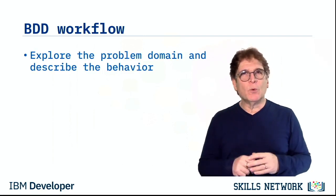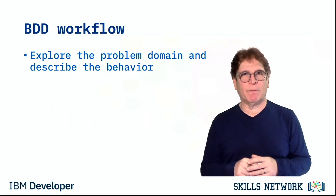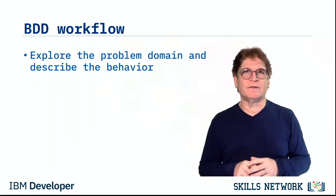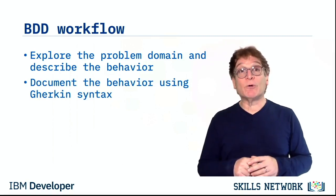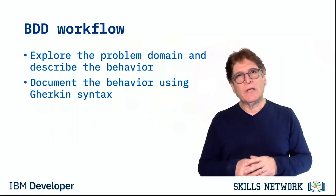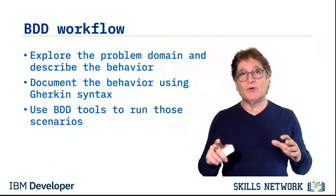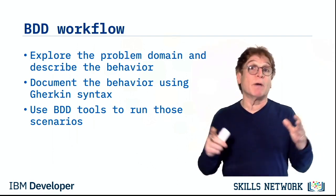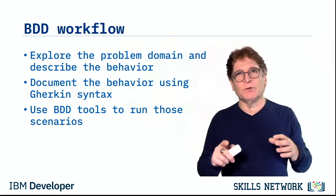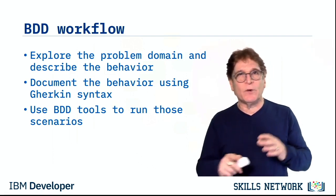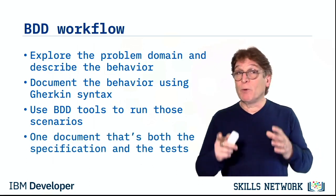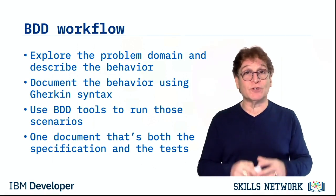The workflow starts with developers, testers, and customers exploring the problem domain and collaborating to produce concrete examples that describe the behavior they want. They document these behaviors using a language known as Gherkin, a natural language representation. Next, the team uses a BDD tool like Behave for Python, JBehave for Java, or Cucumber for Ruby to run these examples as automated acceptance tests. The BDD tool tells them which examples are implemented and working, and before you know it, you have one document that is both the specification and the tests for your software.